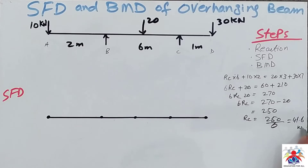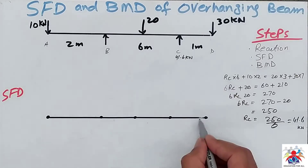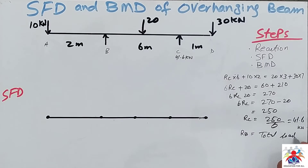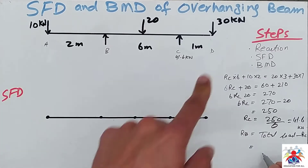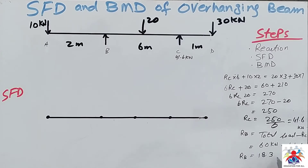Reaction at RC equals 250 divided by 6, so we get 41.6 kilonewton at RC. Now we calculate reaction at RB. RB equals total load minus RC. Total load is 30 plus 20 plus 10, which is 60 kilonewton, minus RC of 41.6 kilonewton, so at RB we get 18.6 kilonewton.